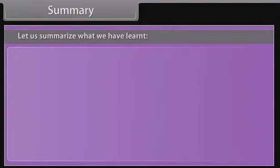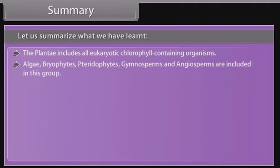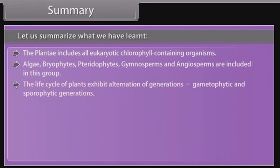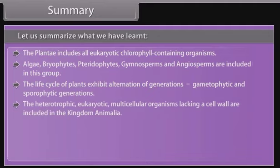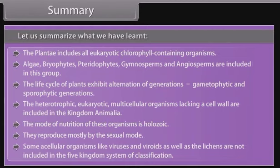Let us summarize what we have learned. Plantae includes all eukaryotic chlorophyll-containing organisms — algae, bryophytes, pteridophytes, gymnosperms, and angiosperms. The life cycle of plants exhibits alternation of generations: gametophytic and sporophytic generations. Heterotrophic, eukaryotic, multicellular organisms lacking a cell wall are included in kingdom Animalia; their mode of nutrition is holozoic. They reproduce mostly by the sexual mode. Acellular organisms like viruses and viroids, as well as lichens, are not included in the five-kingdom system of classification.